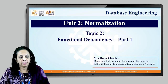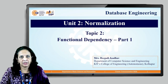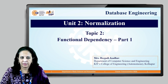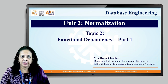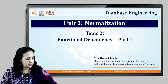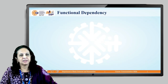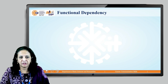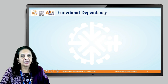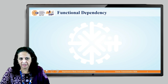We move to the next topic from normalization — functional dependency. This topic is divided into two parts, part 1 and part 2. Functional dependency is very important for normalization and plays a key role in good database design.